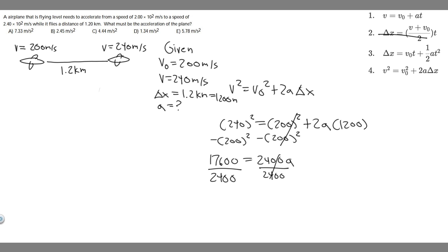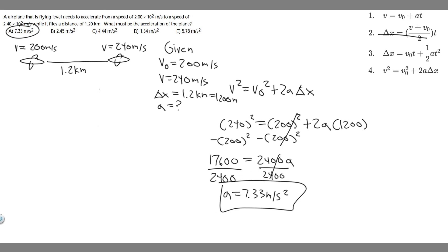Solving algebraically by dividing, we get a equals 7.333 repeating, which we round to 7.33. Looking at the answer choices, option A is 7.33 meters per second squared — and the units for acceleration are meters per second squared. So the answer to this problem is A, 7.33 meters per second squared. Hopefully you found this useful.